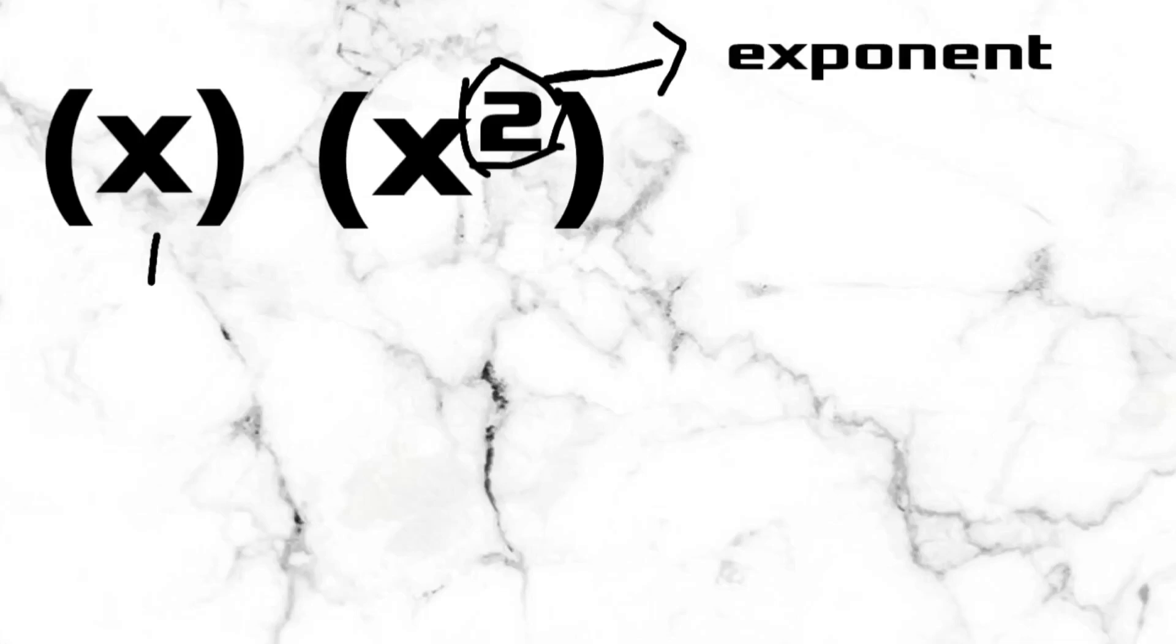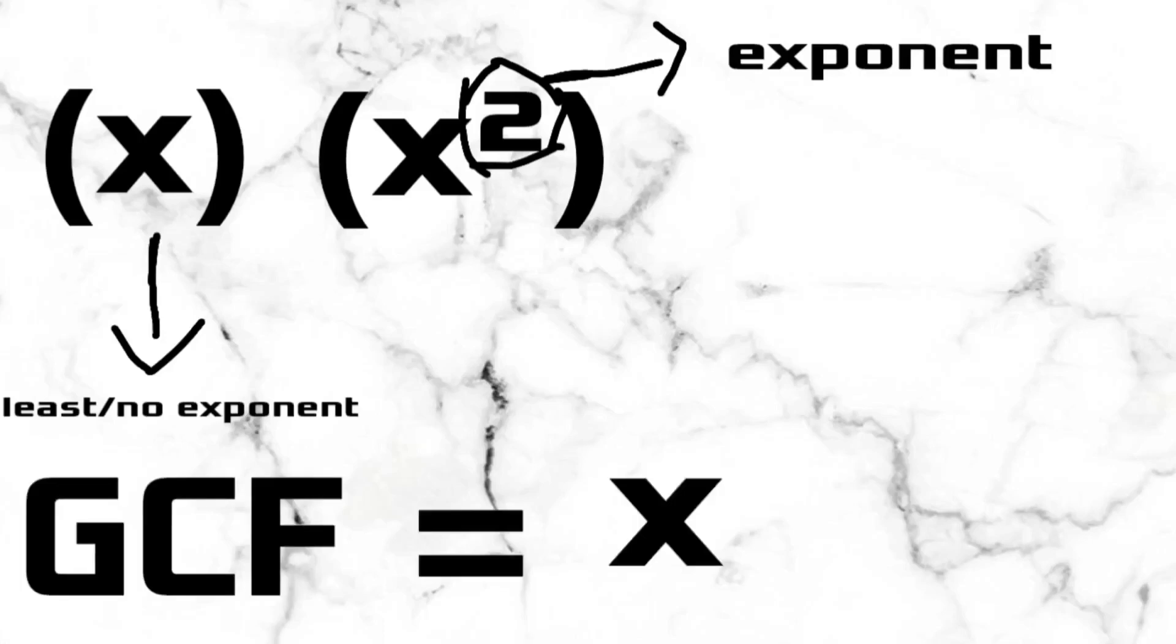So, what term has the least exponent? Yes, x is the term with the least exponent. Thus, the GCF of the variables is x.